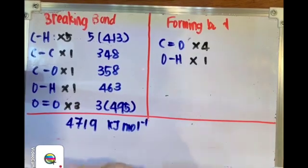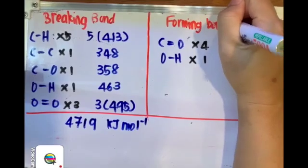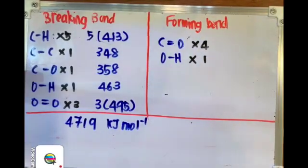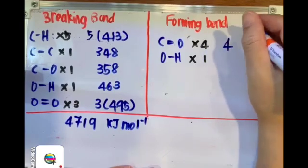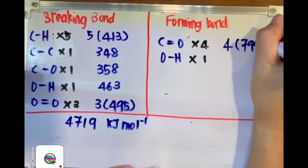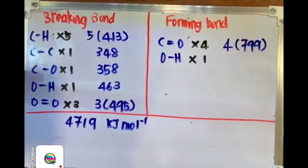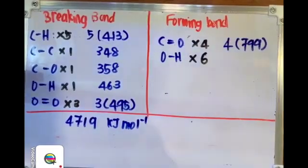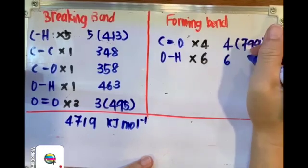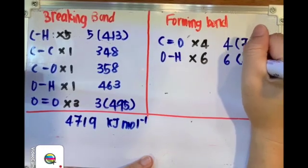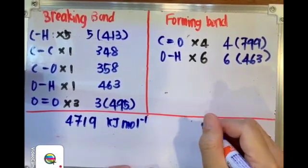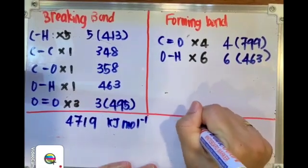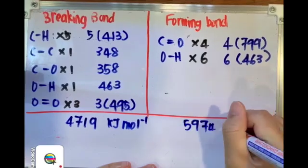Now for the products — we are going to see how much energy needs to be released to form all these chemical bonds. The first is C=O double bond: each is 794, times 4. For O-H, there are 6 of them at 463 each. So the total amount of energy released during the formation of chemical bonds is 5,974 kilojoules per mole.